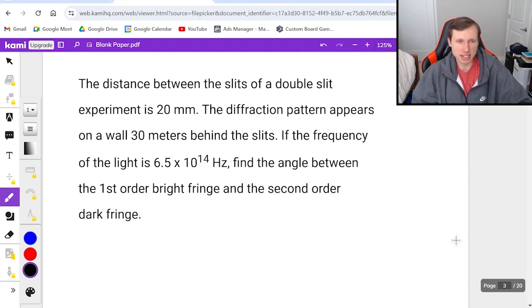Feel free to try this on your own. As a piece of advice: if I want the angle difference between the first order bright fringe and the second order dark fringe, we need to use a certain equation twice because I have two different m values. I won't tell you which equation. Try the problem, and when you're done or stuck, unpause and see how I do it.